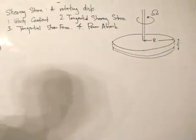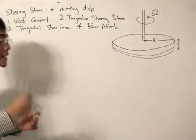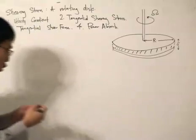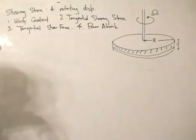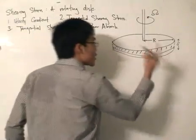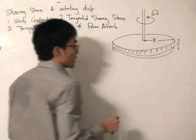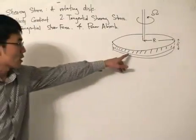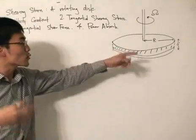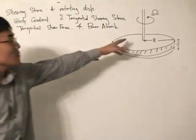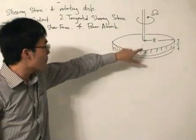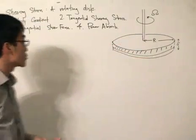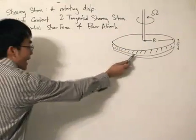We are going to look at the shearing stress of a rotating disc. This disc is going to rotate with angular velocity omega, and there will be a film over here. As the disc rotates, there will be a shearing stress formed between the disc and the liquid. The shearing stress applies force to the liquid, and by Newton's third law, the liquid also applies that same shearing stress onto the disc. There is going to be a transfer of power — the disc applies shearing stress onto the liquid, doing mechanical work onto the film. So what I want to find out is the power absorbed by the film.